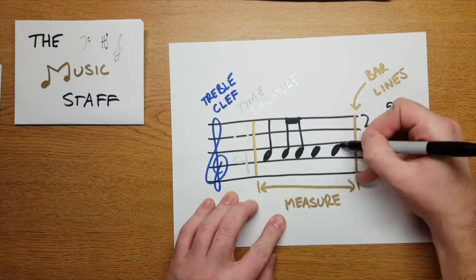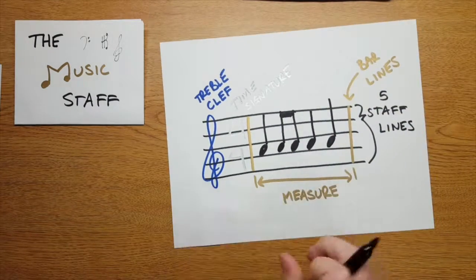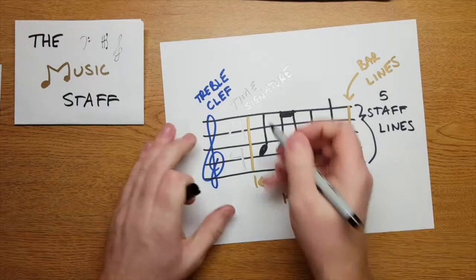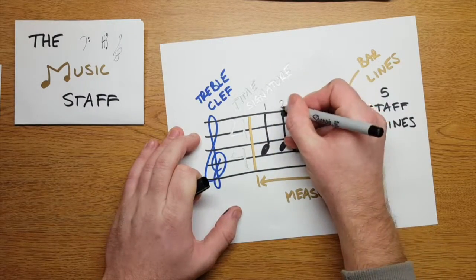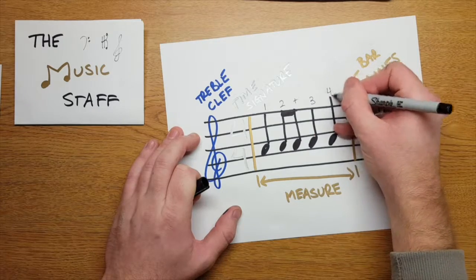With four beats in my measure, I can draw a quarter, eighth, eighth, quarter, quarter, and fill my measure with one, two, and three, four beats.